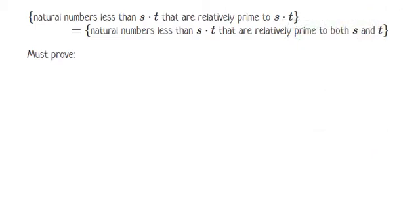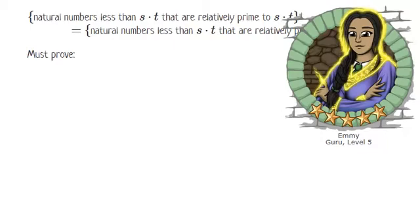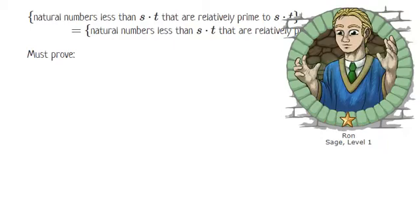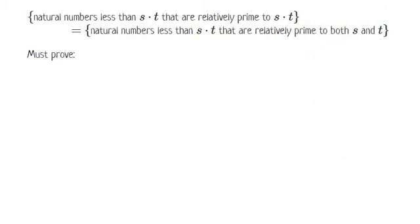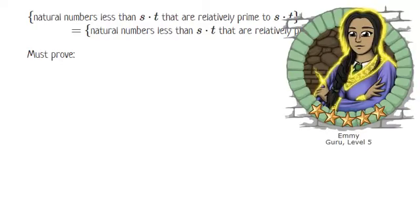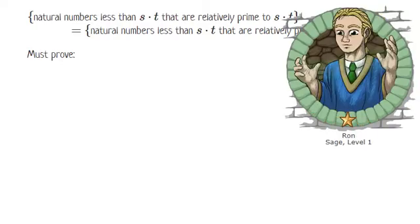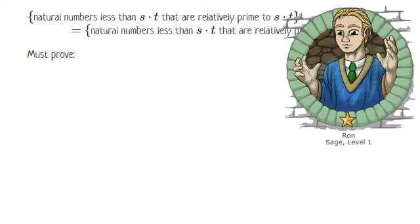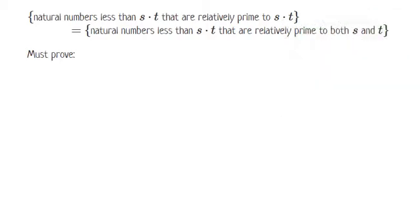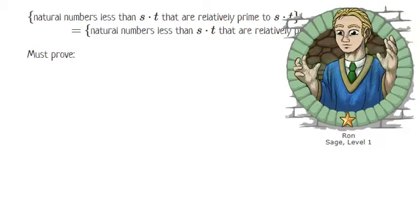So if, let's say, d is a natural number and it's less than s times t, and it's relatively prime to s times t, then? Then you have to show it's a natural number. He just said it was a natural number. And it's less than s times t. Again, he just said that. And it's relatively prime to s and to t. I bet that's the hard bit.